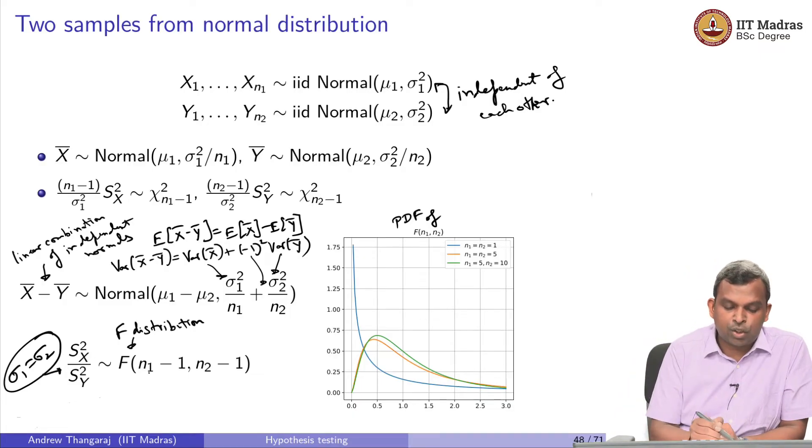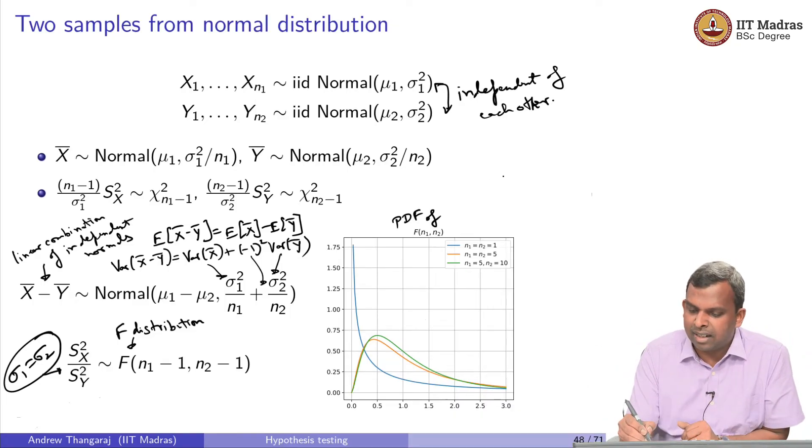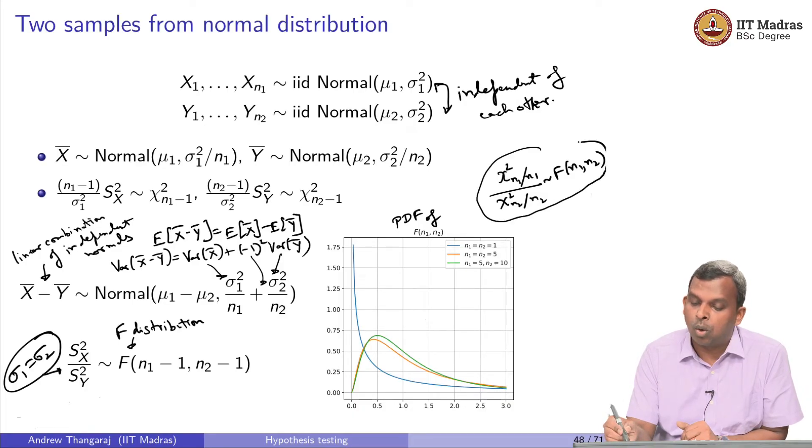Like I said, the ratio is F(n1-1, n2-1). In case you are interested in the sort of more general result, it looks like this: chi-squared n1 divided by n1, divided by chi-squared n2 divided by n2. This actually is F(n1, n2). This is where the F distribution comes from, in case you are interested as to how I got this.